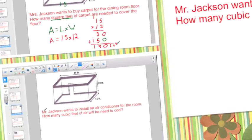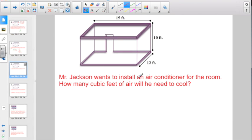Let's try another one. Here it says Mr. Jackson wants to install an air conditioner for the room. How many cubic feet of air will he need to cool? And your key word right here, if they want an answer in cubic feet, you should know that you're doing a volume problem. So remember, what's my formula for volume? I have a formula, V equals L times W times H. Volume equals length times width times height.